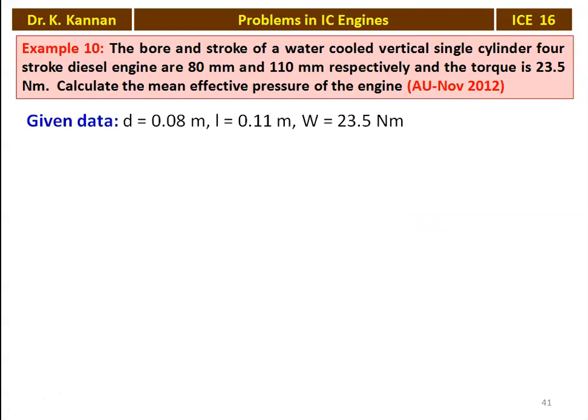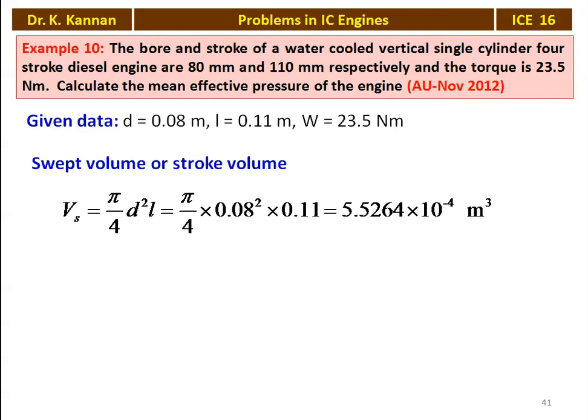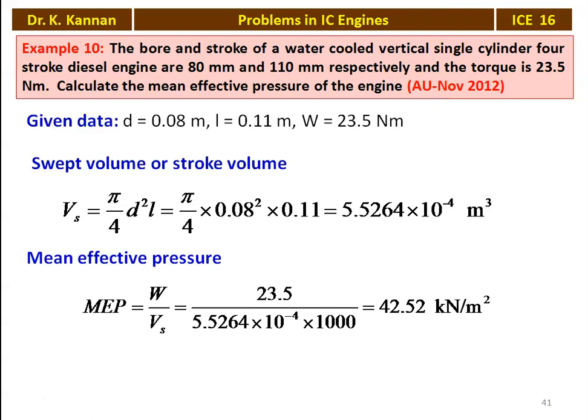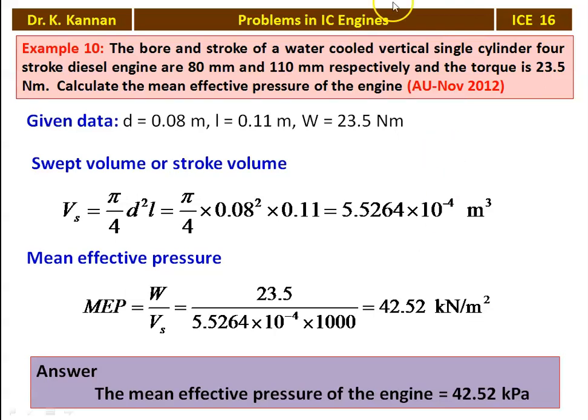Example number 10, from November 2012 question paper: the bore and stroke of a water-cooled vertical single-cylinder four-stroke diesel engine are 80 mm and 110 mm respectively, and the torque is 23.5 Newton-meter. Calculate the mean effective pressure. Given: D = 0.08 m, L = 0.11 m, torque = 23.5 Nm. Swept volume V = (π/4) × 0.08² × 0.11 = 5.5264 × 10⁻⁴ m³. Mean effective pressure = work done / swept volume = 23.5 / (5.5264 × 10⁻⁴ / 1000) = 42.52 kN/m², which is 42.52 kPa.